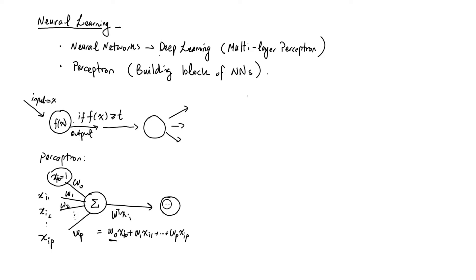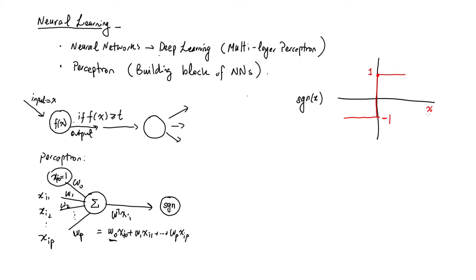That weighted sum gets passed into another function called the sign function. The sign function returns 1 or negative 1: if x is positive it returns 1, if x is negative it returns negative 1. So sign(x) = 1 if x > 0, and negative 1 if x < 0. The output of the perceptron is therefore either plus 1 or negative 1.